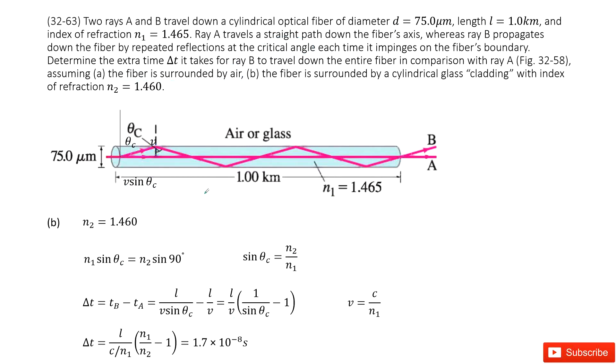The second case is very similar. The only change is that the fiber is surrounded by glass instead of air, so N2 becomes 1.460. Simply substitute this new value for N2, and you get the answer. Thank you.